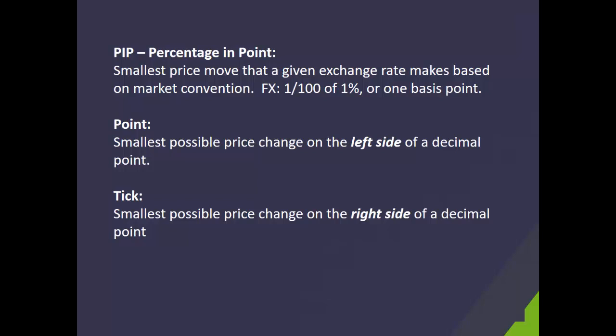What does that mean? Basically, it is the smallest price movement of a currency pair or an exchange rate based on market convention. Typically, we look at four numbers behind the decimal point in currencies, and a movement by one would be one PIP — in other words, it's one hundredth of one percent, equal to one basis point.